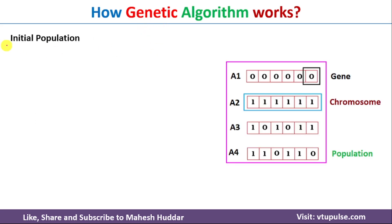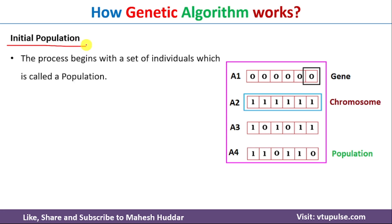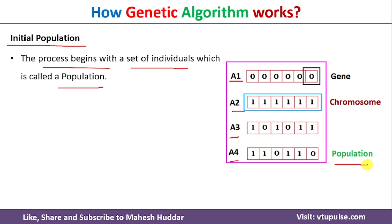The first step in genetic algorithm is the initial population. The process begins with selecting a set of individuals known as the population. For example, here I have selected four individuals — A1, A2, A3, A4 — which form the initial population.